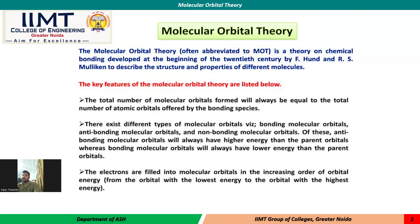The basic and important features of Molecular Orbital Theory are listed here. The total number of molecular orbitals formed will always be equal to the total number of atomic orbitals offered by the bonding species. For example, if two atoms combine together, the number of atomic orbitals combining will give rise to an equal number of molecular orbitals. There exist different types of molecular orbitals — bonding molecular orbitals, anti-bonding molecular orbitals, and non-bonding molecular orbitals.